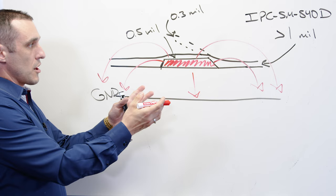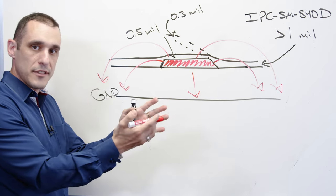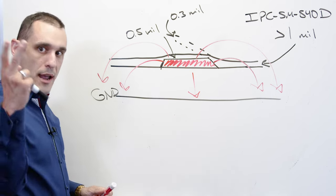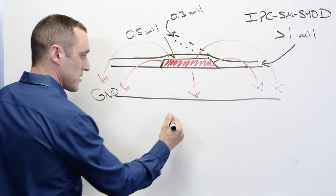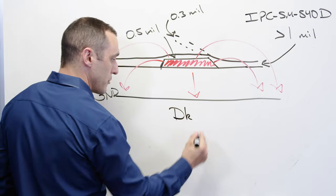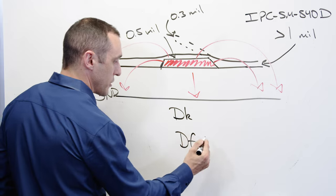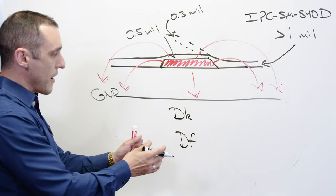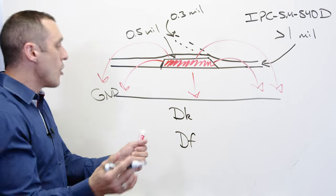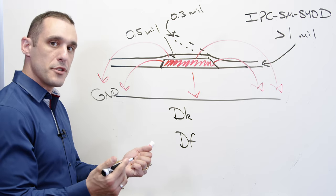Whether or not the solder mask actually affects the strength of the electromagnetic field depends on two parameters. It first depends on the Dk value and then the Df value and these values vary depending on which type of solder mask material you're using.